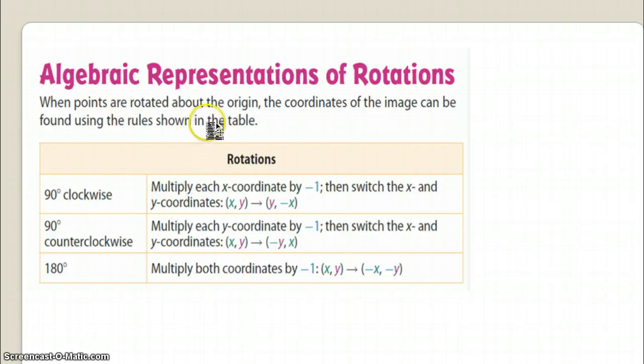When points are rotated about the origin, the coordinates of the image can be found using the rules in the table. We have looked, we have seen this. I know in my unpacking I actually gave you these rules, but it's good that the book has these rules available for us.